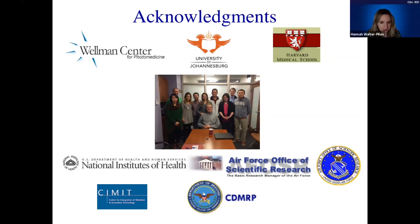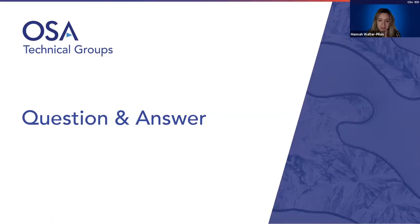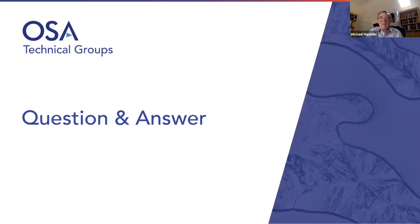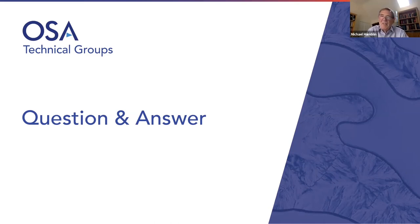Q&A: What fraction of light penetrates the skull to the brain? In humans, about 1–2% gets through the scalp and skull to the brain surface, depending on skull thickness at different locations. In mice, it can be as much as 5%. This has been studied in experimental animals and human cadaveric heads.